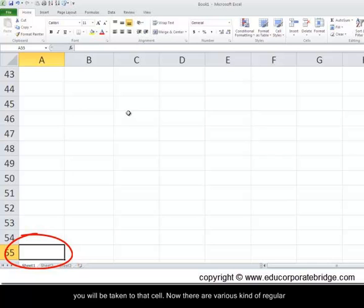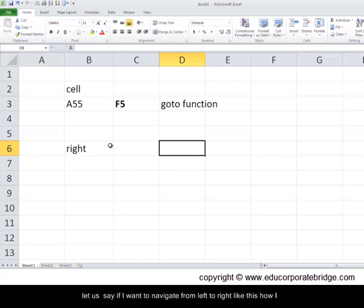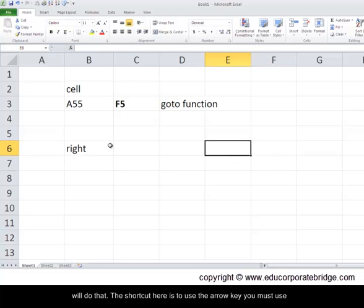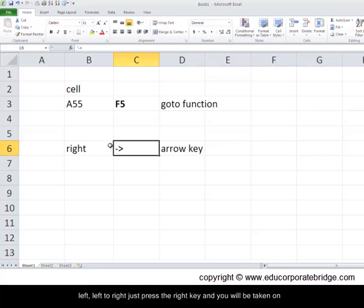Now there are various kinds of regular shortcuts which you must know. One is how to navigate from left to right. Let's say if I want to navigate from left to right like this. How will I do that? The shortcut here is to use the arrow key. You must use the arrow key which helps you to go from top to bottom, bottom to left, left to right. Just press the right key and you will be taken on the right.